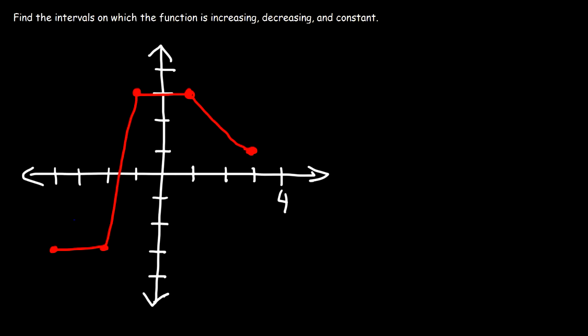So in this region the function is relatively constant. I know my graph is not perfect but we're going to be reasonable with it. In the second part it's increasing — it's going up. In the third part it's constant, and then in the last part it's decreasing — it's going down.